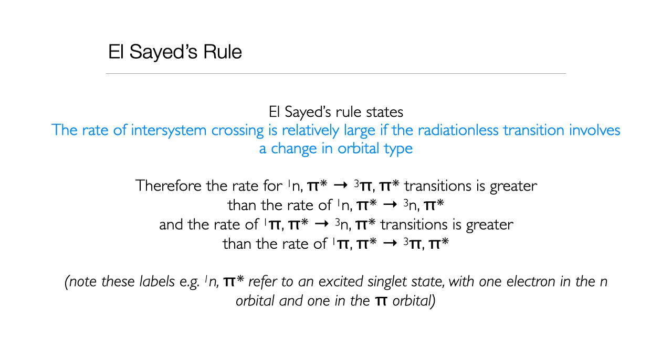The increase in rate is about a factor of a thousand, so considerable change in the efficiency of the process if I can have a change in orbital type. Now, I've written each of these statements here, and I write them here because that's how they appear in textbooks. But I do think that actually looking at what's going on is considerably more helpful.